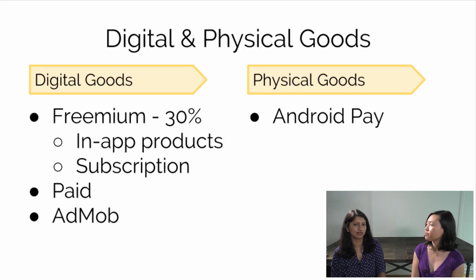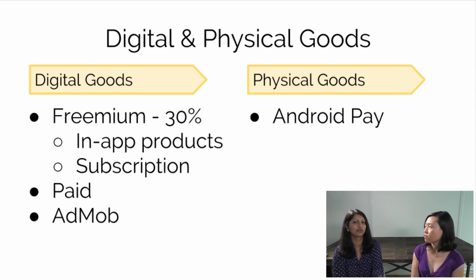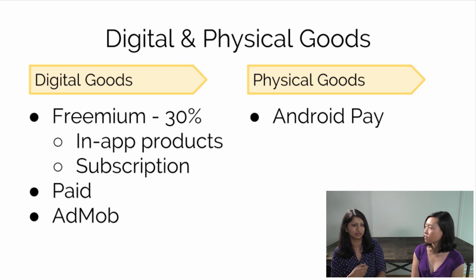It kind of depends on what revenue model you want to use. You could go with freemium or paid. With paid, you basically buy the app off of the Play Store. With the freemium model, you're offering users the choice of trying out your app for free and then locking something behind a paywall, so users can play around with your app before buying the premium feature. My talk is going to focus more on the freemium model and how you can integrate the in-app billing API into your app, as well as the Google Play developer API on the server side.